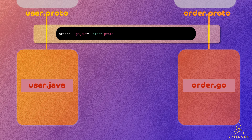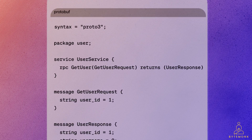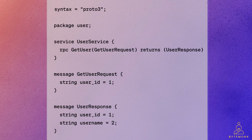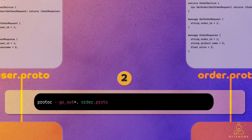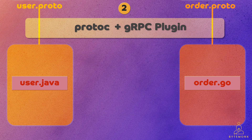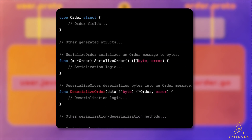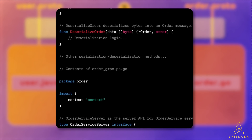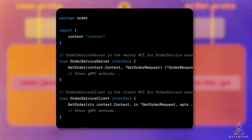In terms of the development workflow, developers write the .proto file, which defines the structure of the messages exchanged between microservices. They specify the message fields, their types, and any required services or RPC methods. Developers then use the protocol buffer compiler, or protoc, along with language-specific plugins to generate code in their desired programming language. For example, here we have generated Go code, but it supports many other languages. The generated code includes classes or objects that represent the messages and services defined in the .proto file.